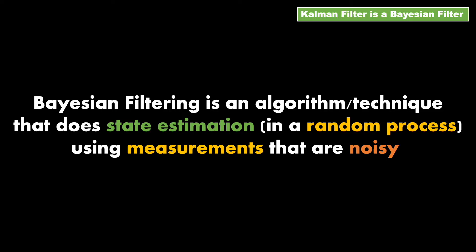But before we embark on this journey, let's be clear with the mission of Bayesian filters. Bayesian filter, and by extension Kalman filter, is an algorithm to perform state estimation using measurements. These measurements are quite often noisy — that is, they have errors. I am emphasizing on this mission formulation instead of a simpler one that seems to suggest that the goal of Kalman filter is to reduce the noise from measurements. And while correct in its own way, this formulation enables many other use cases.